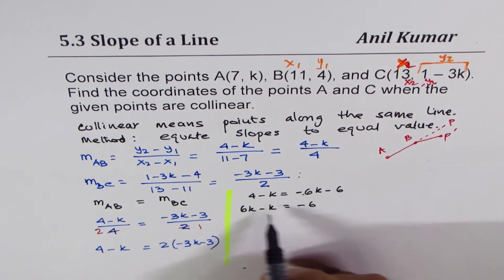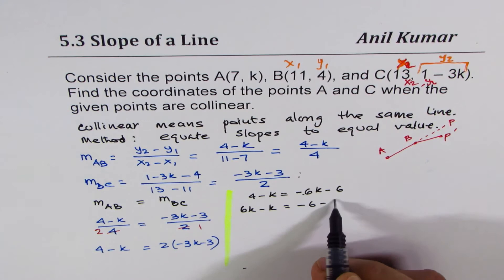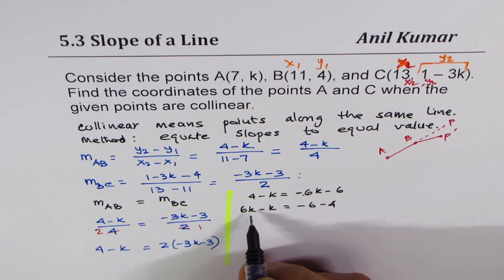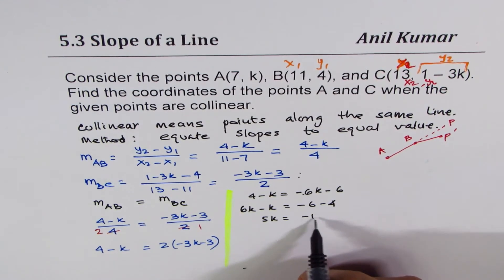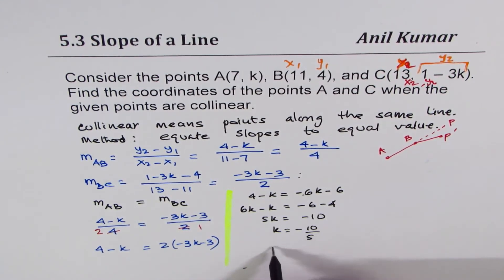equals to minus 6, taking 4 to the other side is minus 4. That gives you 6 minus 1 is 5K, and that is minus 10. Or K is equals to minus 10 over 5. That gives you K as minus 2.